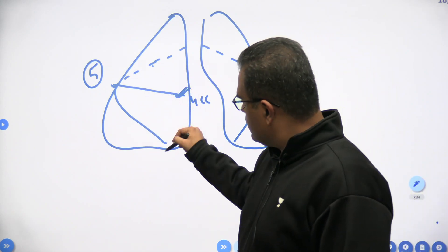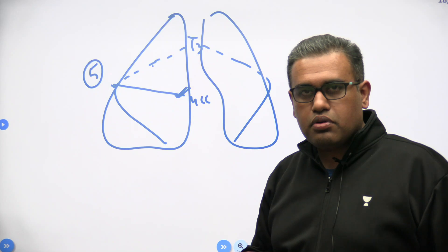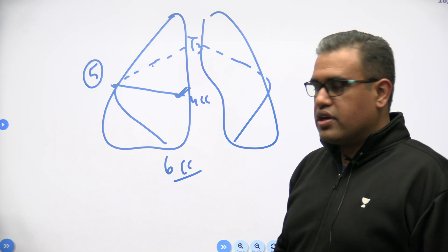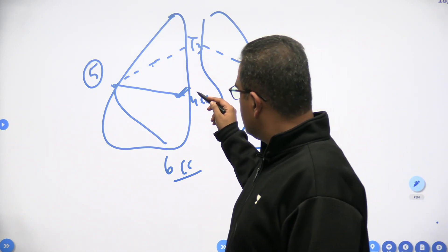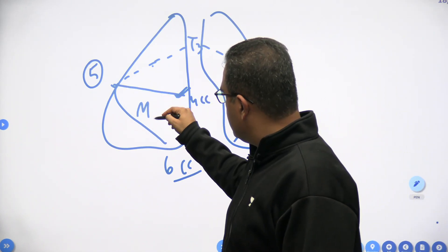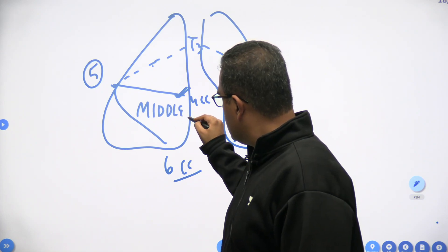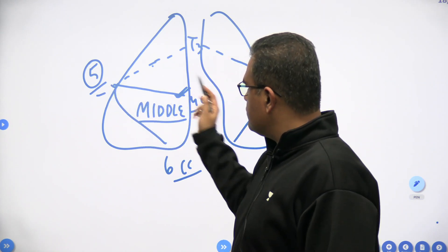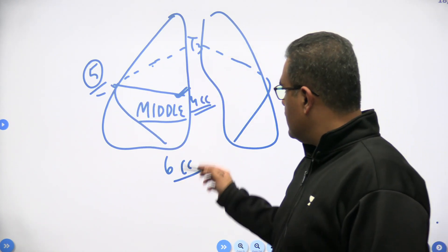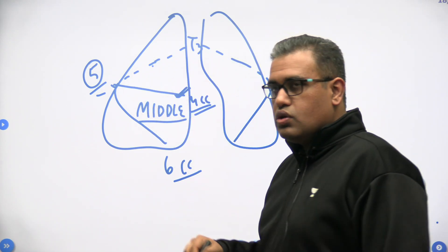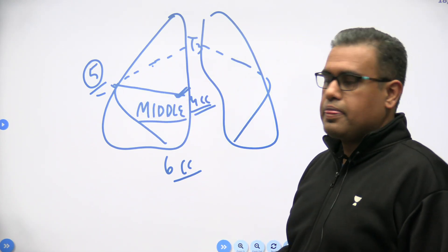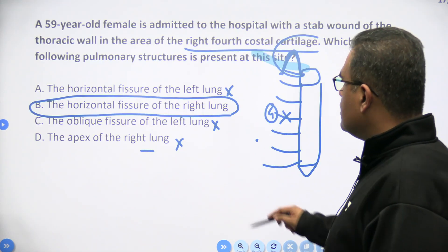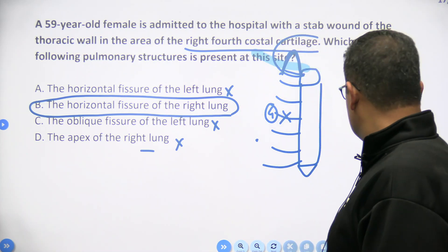The oblique fissure starts at the T3 spine posteriorly, and as it comes down it reaches the sixth costal cartilage. So you can understand that what lies between the horizontal and oblique fissures is the right middle lobe. Just remember: fourth costal cartilage, fifth rib, sixth costal cartilage on the right side — that is the surface marking that includes the right middle lobe. So option B — horizontal fissure of the right lung — is the answer.